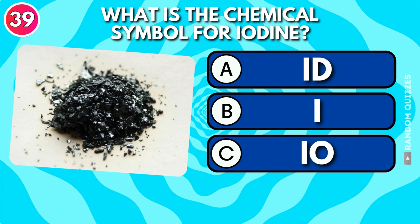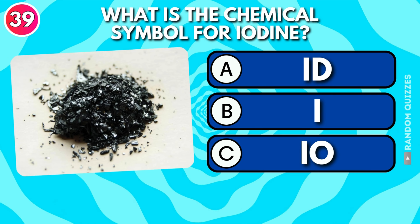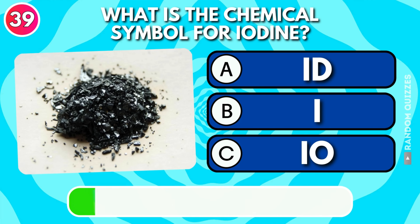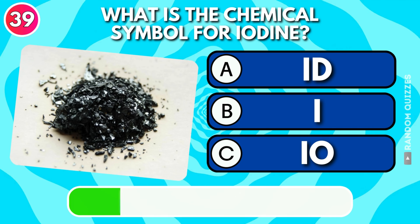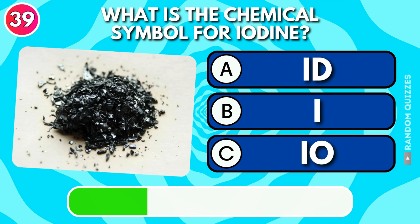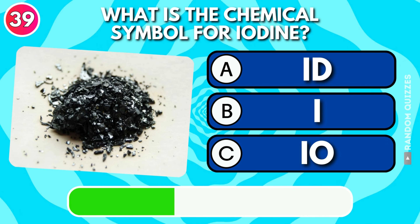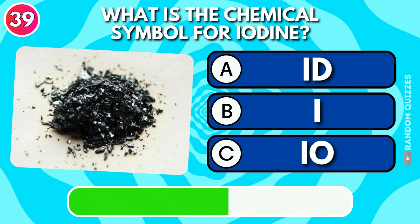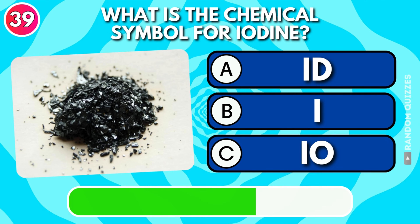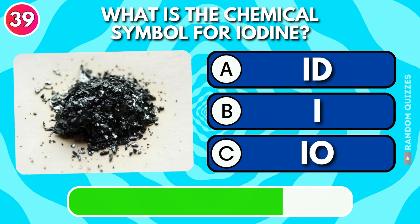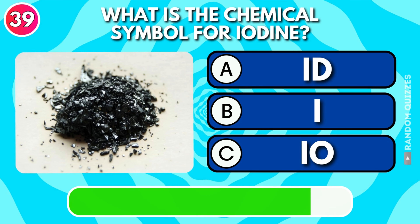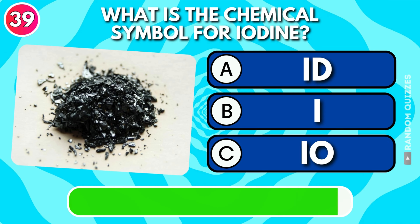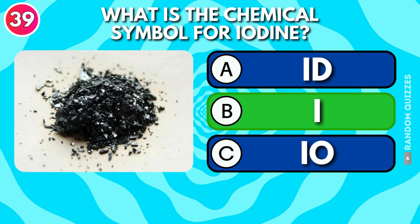What is the chemical symbol for iodine: Id, I, or Io? Answer: I.